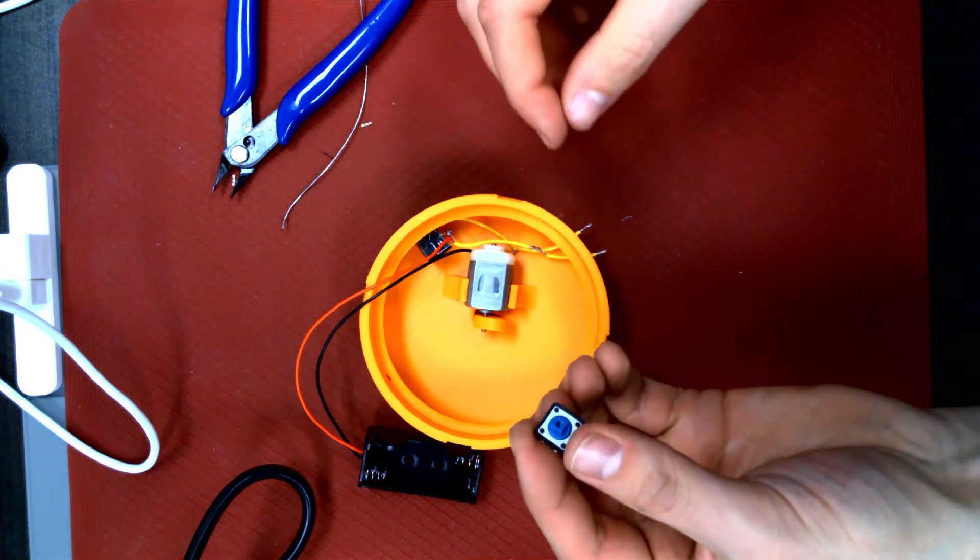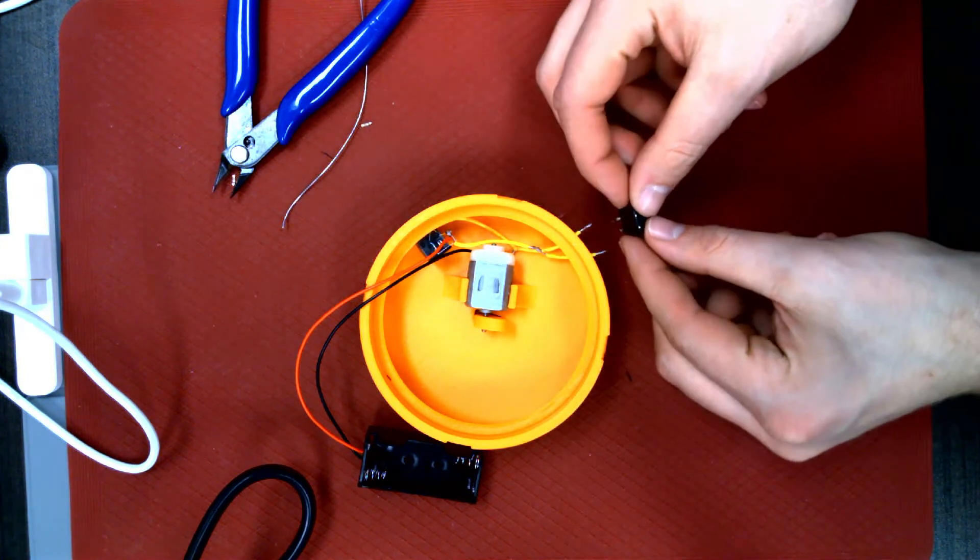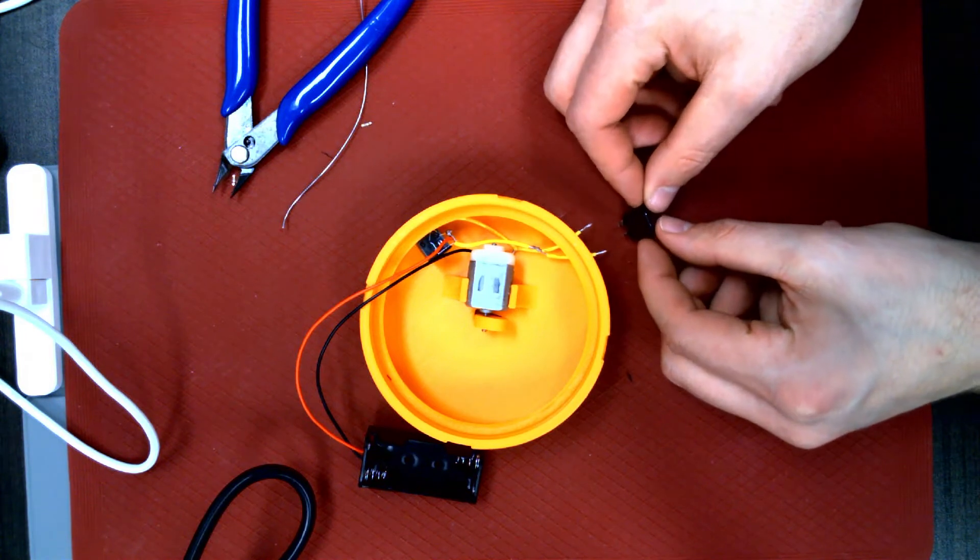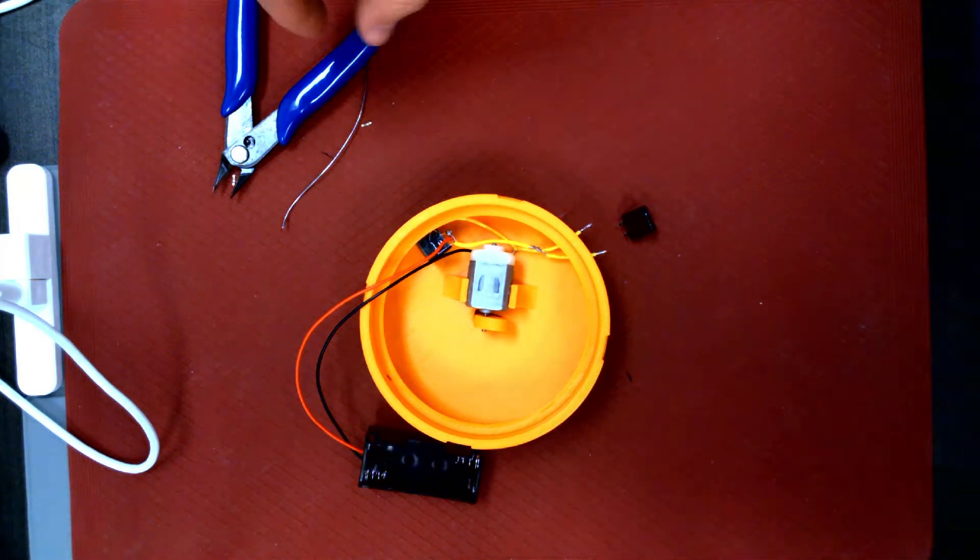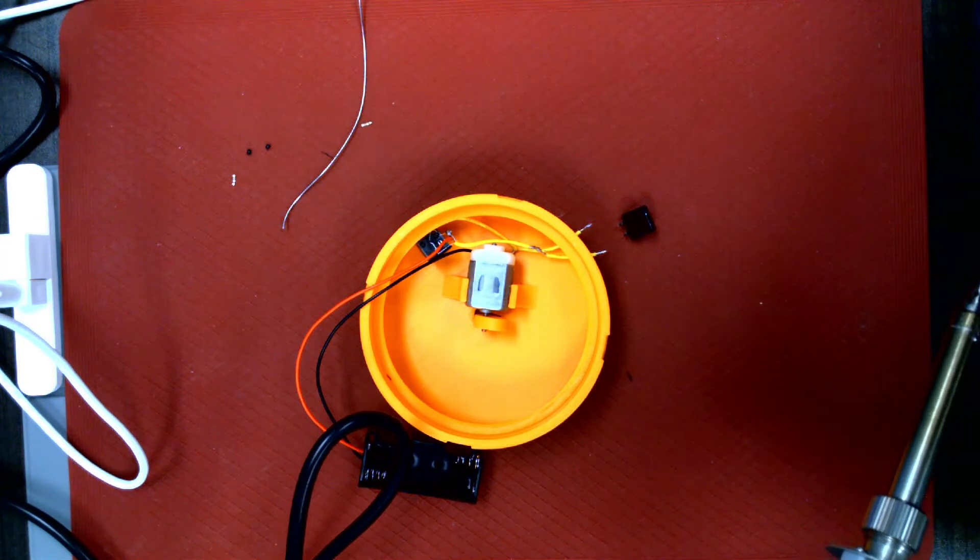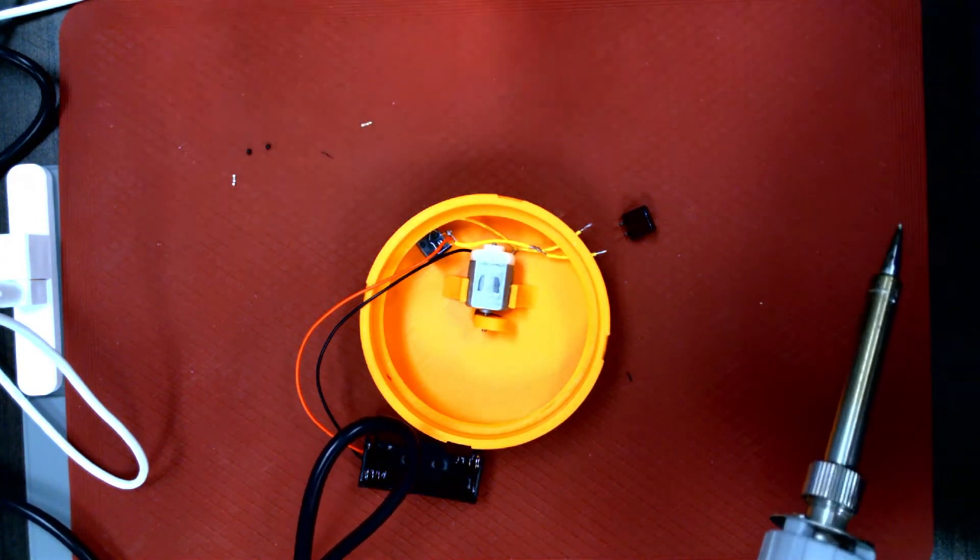To solder these wires to the switch, it is best to tin the wire ends and switch pins with solder. This essentially means coating each surface with a little solder before actually soldering them together.